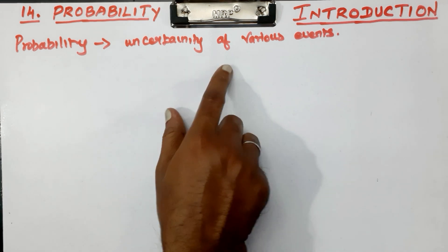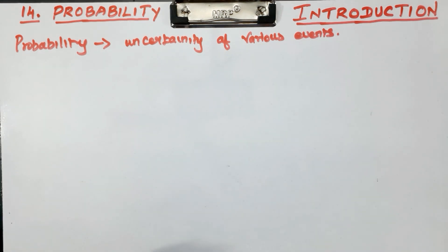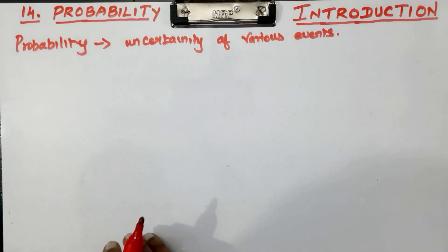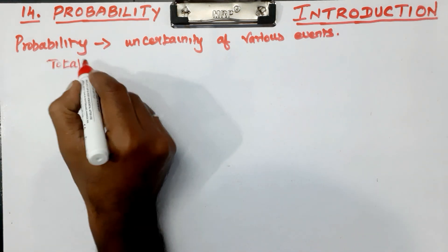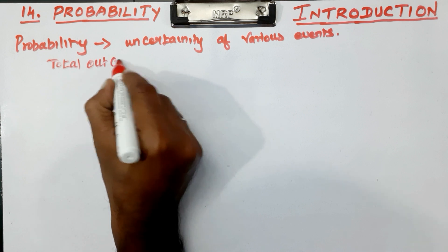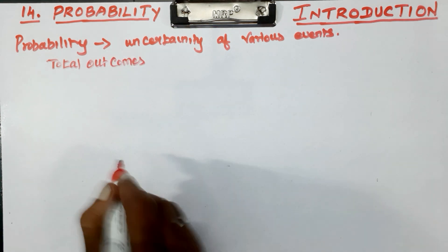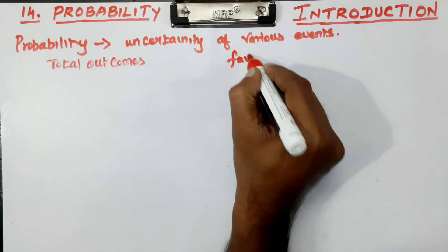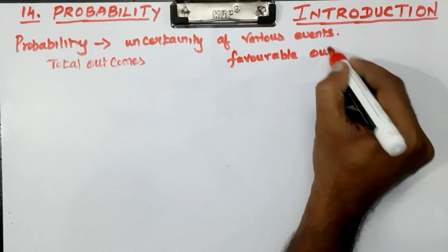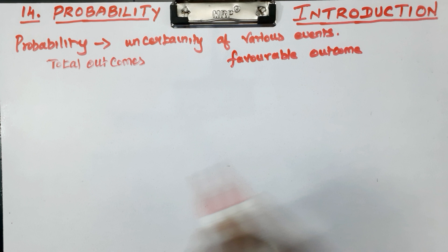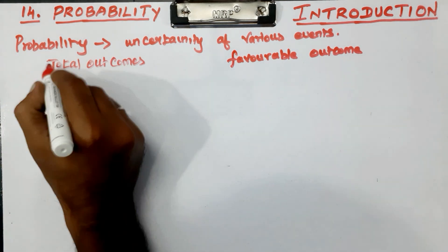Uncertainty of various events. In the case of uncertainty of various events, there are two key decisions. One is the total outcome and the other is the favorable outcome.